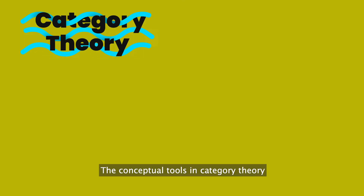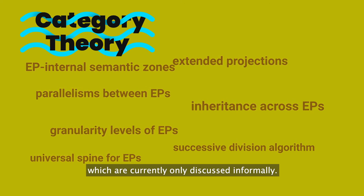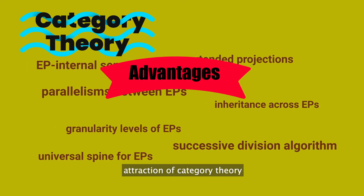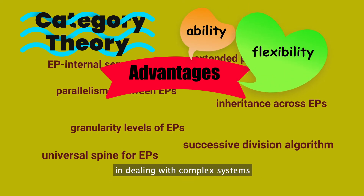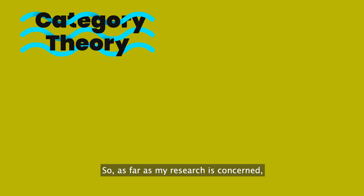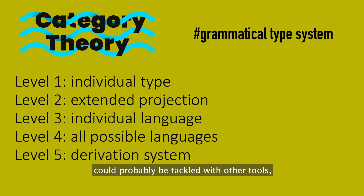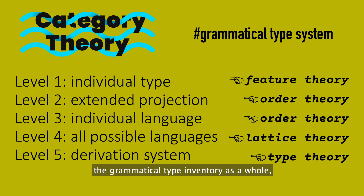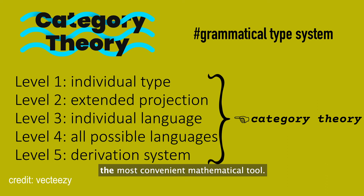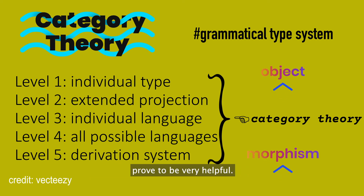The conceptual tools in category theory allow us to precisely and systematically formalize a bunch of linguistic ideas which are currently only discussed informally. A biggest advantage and potential attraction of category theory for theoretical linguists is its unparalleled ability and flexibility in dealing with complex systems with multiple levels of abstraction. So as far as my research is concerned, even though questions at each individual level of abstraction could probably be tackled with other tools, when our aim is to formally characterize the grammatical type inventory as a whole, category theory becomes the most convenient mathematical tool. At the current stage of my research, I haven't resorted to any advanced concepts, but even the most basic ones like object and morphism proved to be very helpful.